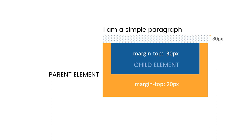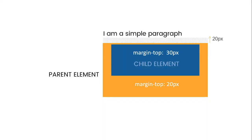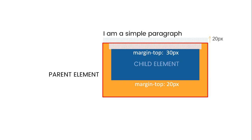There is a solution to this problem. We can use padding, borders, or any non-empty content to separate these margins so that they cannot collide. To get the expected result — 30 pixels to the top of the child element and 20 pixels to the top of the parent element — we apply a border to the parent element to separate these two margins so they do not collide. This is how it can be done.